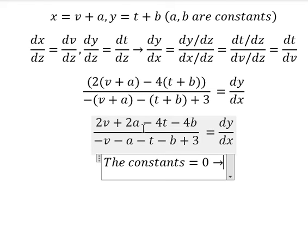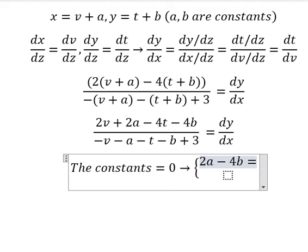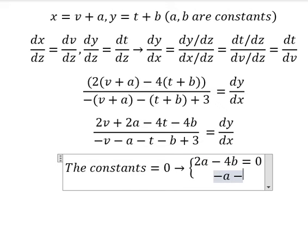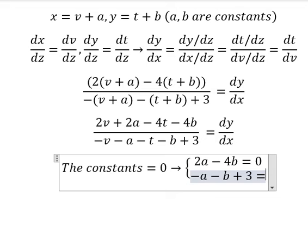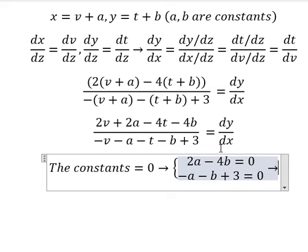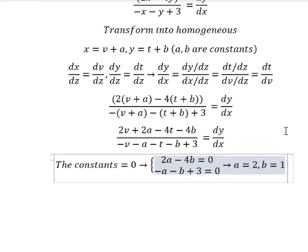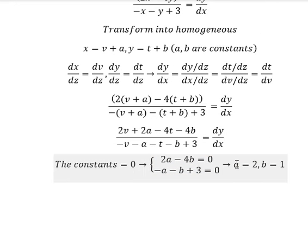So we have 2a minus 4b equals zero, and negative a minus b plus 3 equals zero. Now we need to find the solutions of a and b. So a equals 2 and b equals 1.